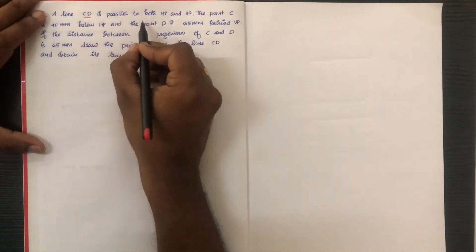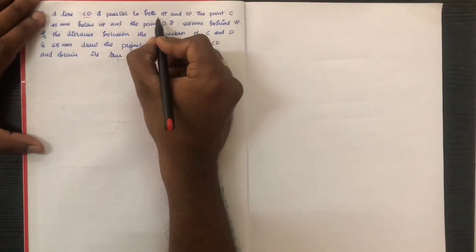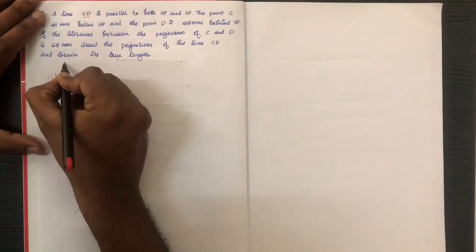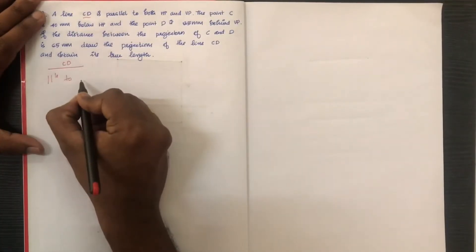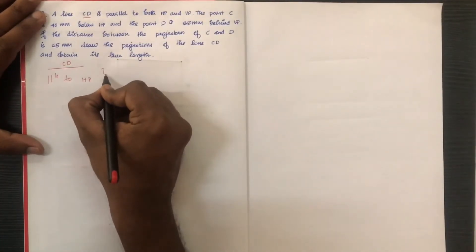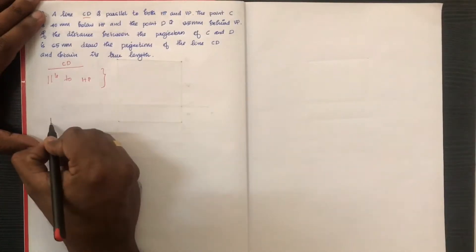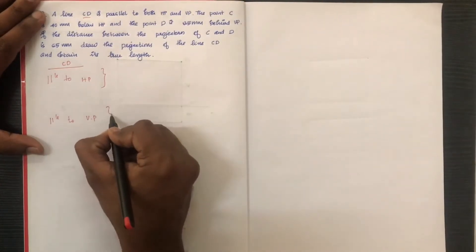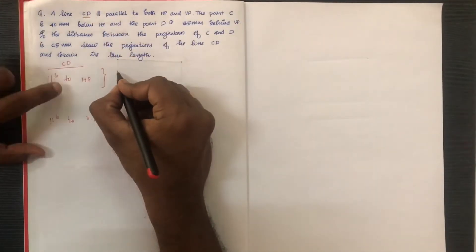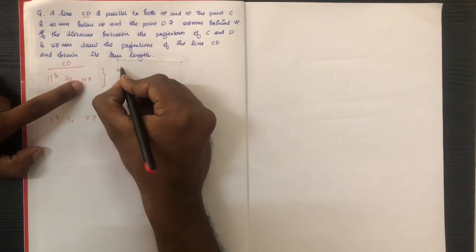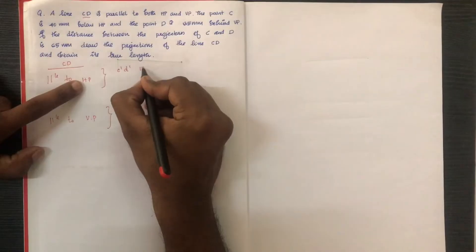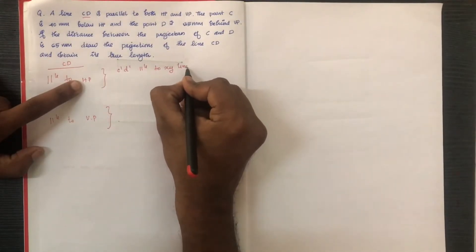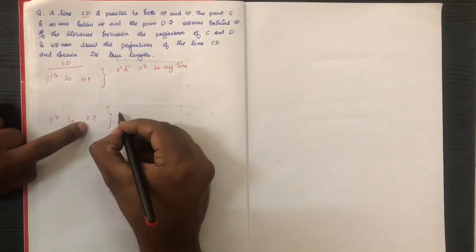Line CD is parallel to both HP and VP. Line parallel to HP — in this condition the elevation is parallel to the XY line. Line parallel to VP — the plan is parallel to the XY line.